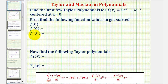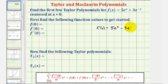Let's begin by finding the first and second derivative of the given function. f prime of x would be equal to the derivative of five e to the x, which is five e to the x, plus the derivative of three e to the negative x, which would be three e to the negative x times negative one, so we'd have minus three e to the negative x. The second derivative is the derivative of the first derivative, so we'd have five e to the x, and minus three e to the negative x times negative one, giving us plus three e to the negative x.